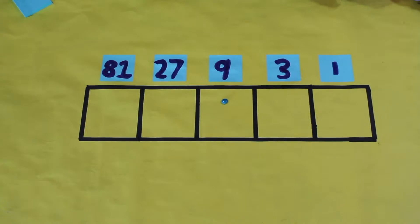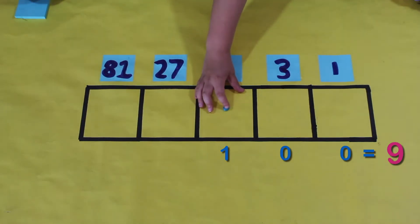So we start with the one, and then that number multiplied by the base, which is three. So three multiplied by the base is nine, and nine multiplied by the base is 27, and 27 multiplied by the base is 81.